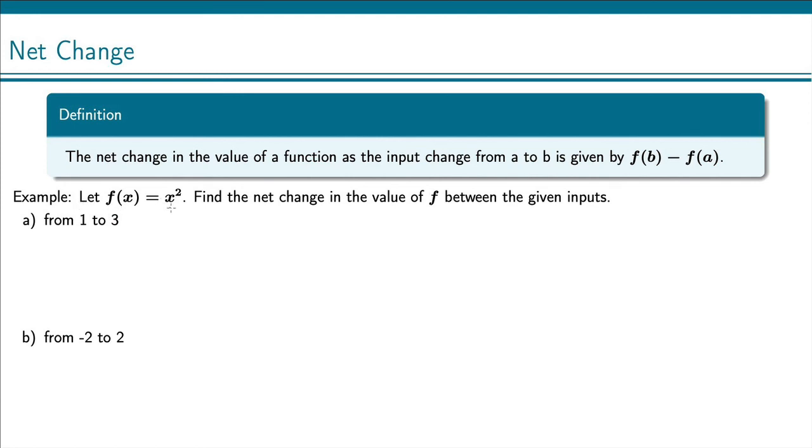Let f of x equal x squared. Find the net change in the value of f between the given inputs. First we'll do from 1 to 3. So we're changing here from 1 to 3. That means a is 1 and b is 3.